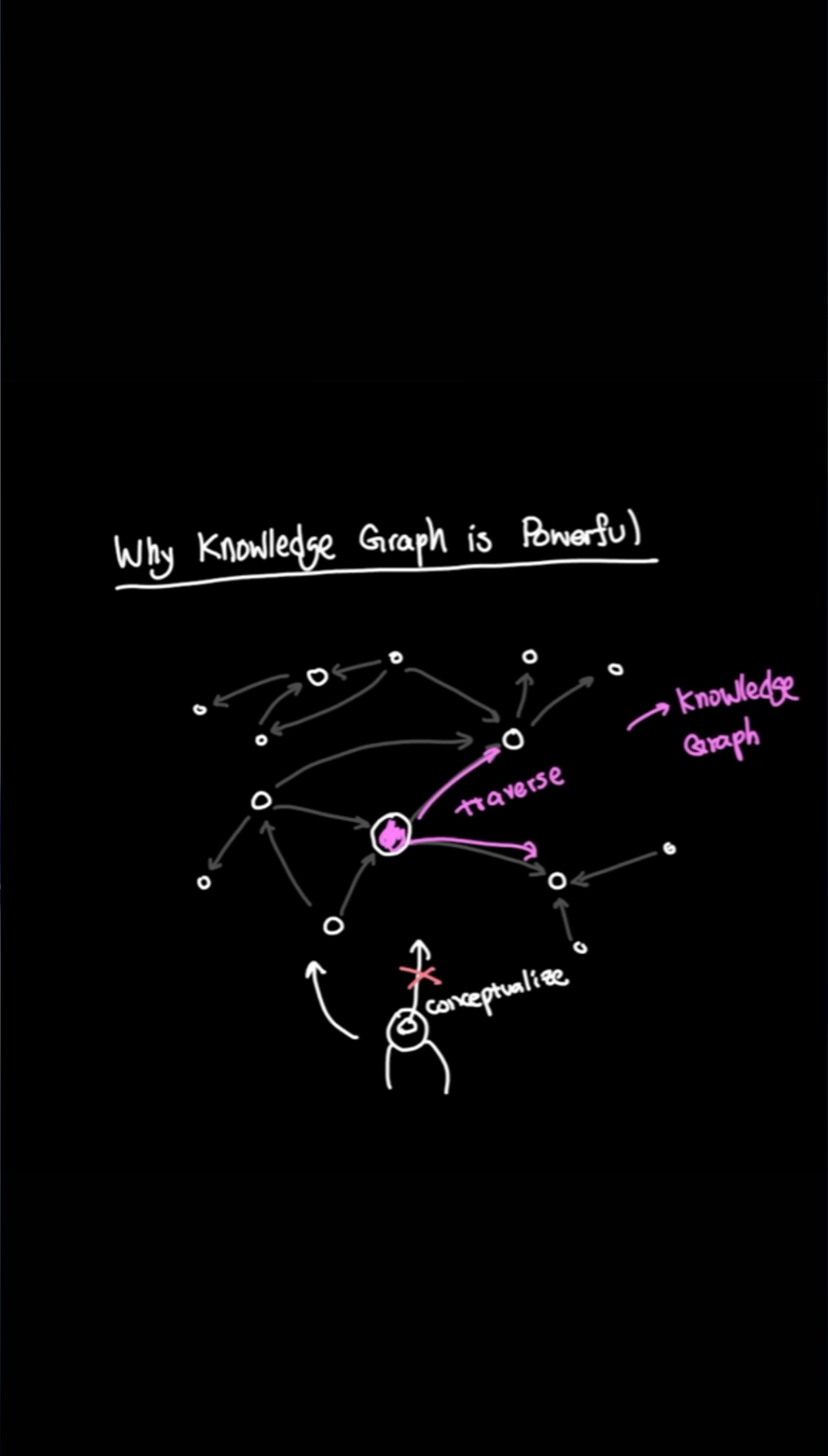Instead of trying to conceptualize how you'll get the data out, the knowledge graph inherently leverages its existing connections and simply walks through the graph to get the data that you're looking for. So both in knowledge representation and knowledge retrieval, we have a huge advantage when it comes to a certain type of knowledge.